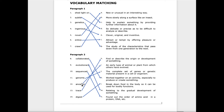Ancestor is I: an early type of animal or plant from which others have evolved. Trace is H: find or describe the origin or development of something. And digest is L: break down food in the body so it can be used for bodily functions. Hopefully you did well on these. If not, just put it on pause and go over them again, and try to think of how they were used in the article.